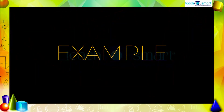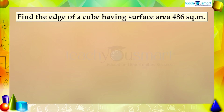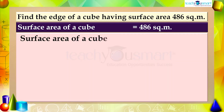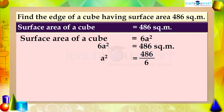Let's see another example. Find the edge of a cube having a surface area of 486 square meters. Given that the surface area is 486 m², we know surface area = 6a², so 6a² = 486. Therefore a² = 486 ÷ 6 = 81.